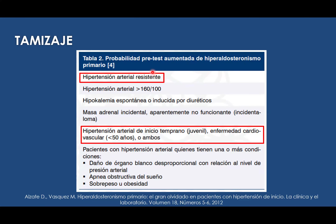Dentro del tamizaje, nosotros tenemos que considerar a aquellos pacientes que puedan presentar este tipo de patologías: aquellos que tengan hipertensión arterial resistente, una presión arterial mayor de 160/100, hipocalemia espontánea o inducida por diuréticos, y aquellos pacientes que tengan un inicio temprano juvenil y una enfermedad cardiovascular diagnosticada en menores de 50 años.